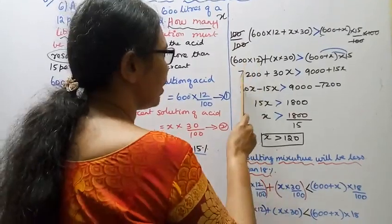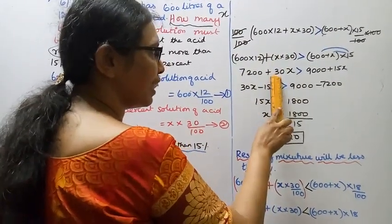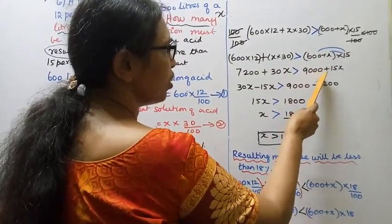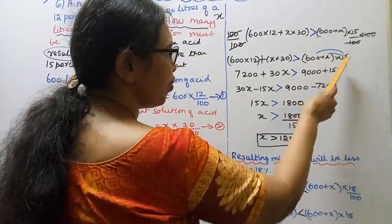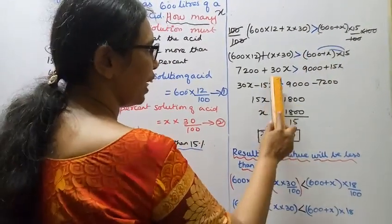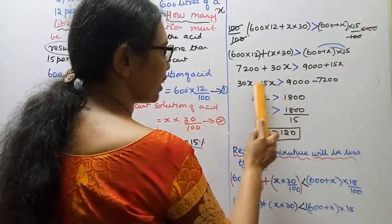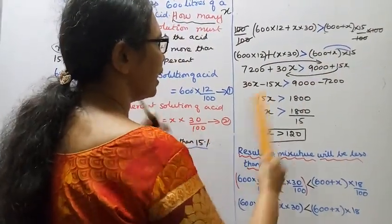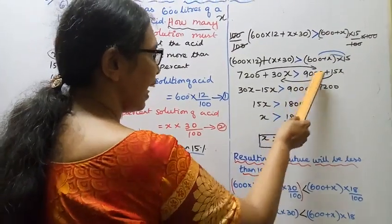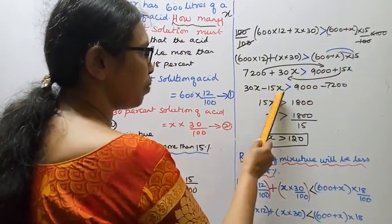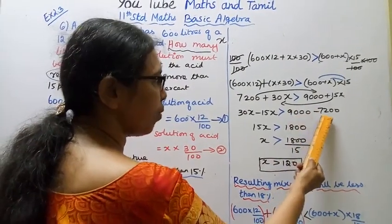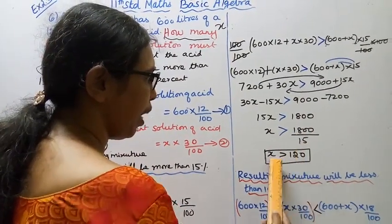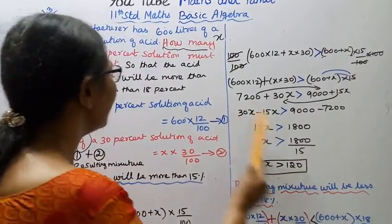600 into 12 is 7200, plus X into 30 is 30X, greater than 600 plus X into 15. Expanding: 7200 plus 30X greater than 9000 plus 15X. So 30X minus 15X greater than 9000 minus 7200. That gives 15X greater than 1800, so X is greater than 120.